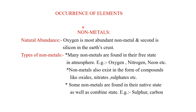Now let us see how non-metals are found in nature. Regarding natural abundance in the earth's crust, oxygen is the most abundant non-metal and the second is silicon. Now, many non-metals are found in their free state in the atmosphere — for example, oxygen, nitrogen, and neon — because they are present in gaseous form, so they are generally found in the free state.